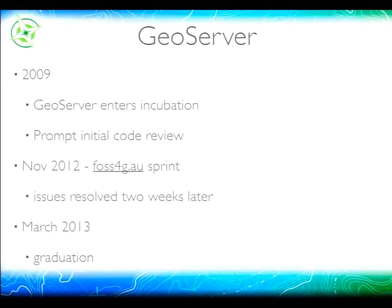GeoServer entered OSGEO incubation in 2009 after FOSS4G in Sydney. We did a prompt initial code review and ran into a few license conflicts — we consulted the Free Software Foundation and Eclipse Foundation and resolved those over about a year and a half. By then the development team had lost interest, so I hijacked a code sprint in Australia, where an army of volunteers clicked through every source file on GitHub raising issues for anything suspicious. Within two weeks developers had fixed all the identified issues. GeoServer graduated in 2013.